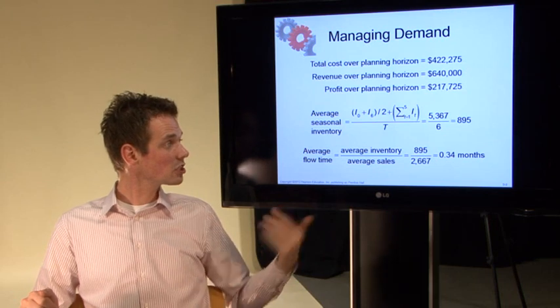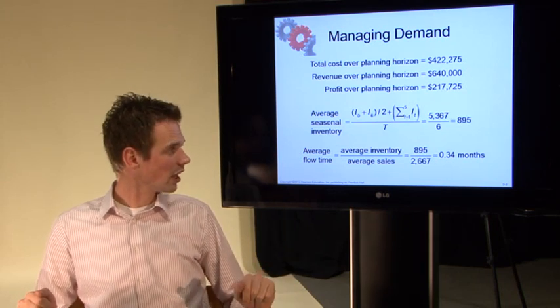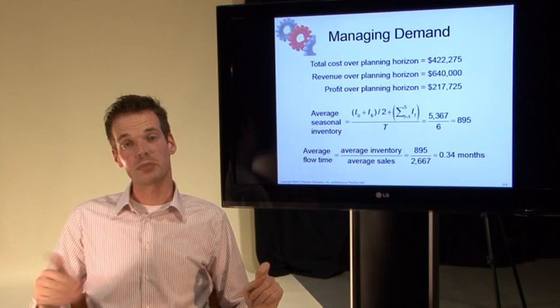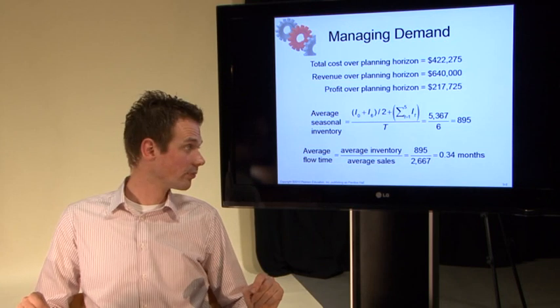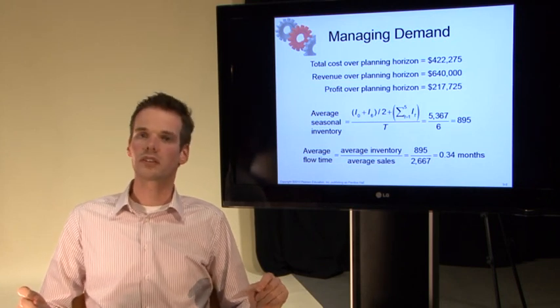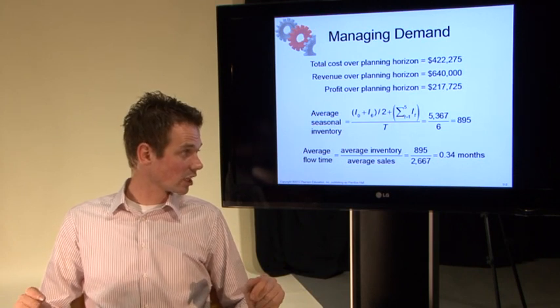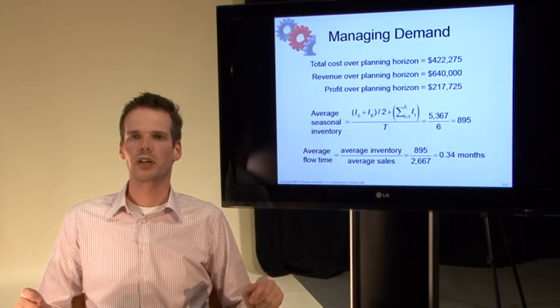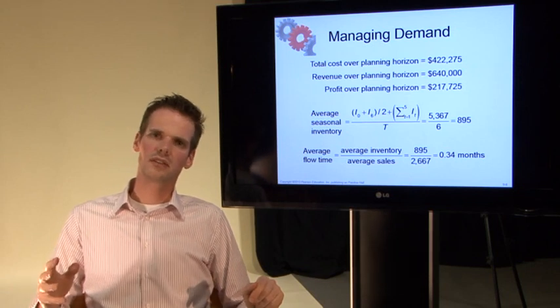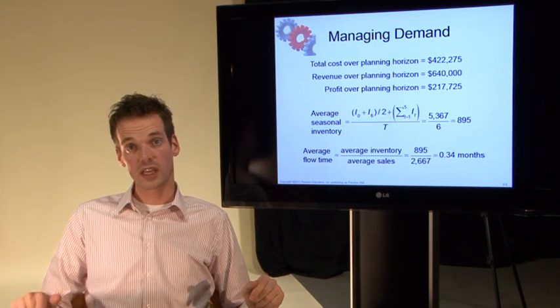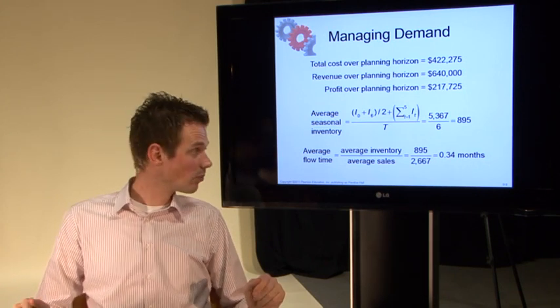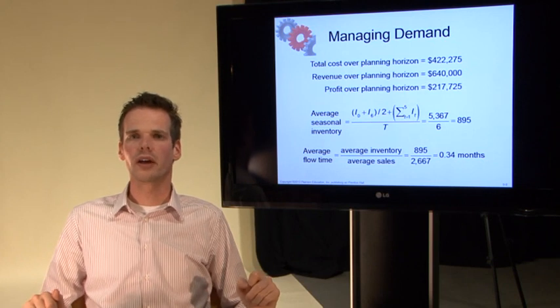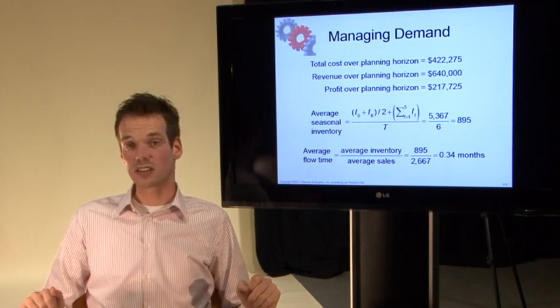The average flow time is the average inventory, 895, divided by the average sales. The average sales can be deducted from the Excel file given earlier and it is 2676. 895 divided by 2667 is 0.34 months. So in this case the average time a unit is in stock is 0.34 months and the average amount of inventory carried is 895.